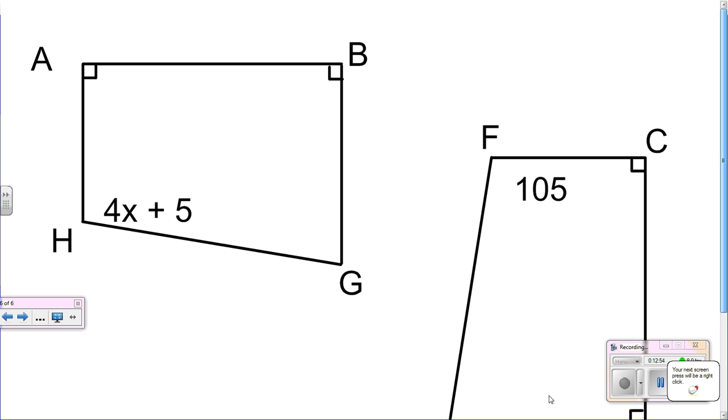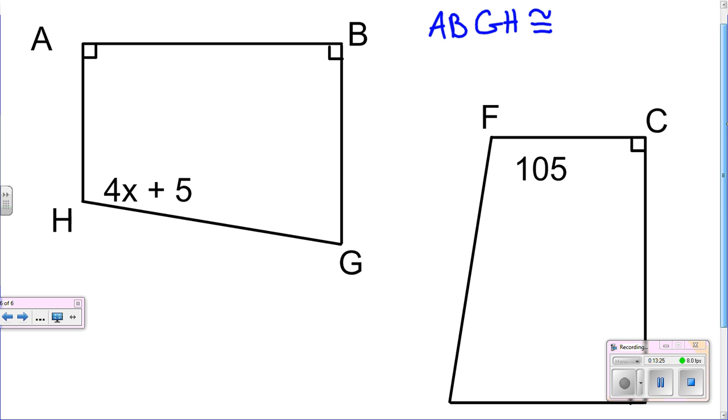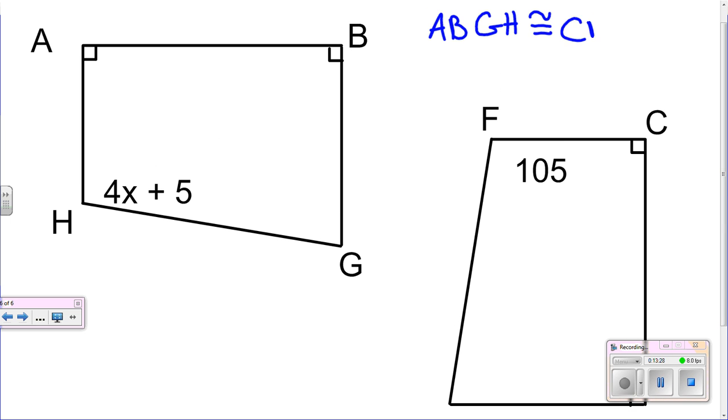This one, first we need to start with a statement. Start with a statement. So we have AB GH is congruent to CDEF.